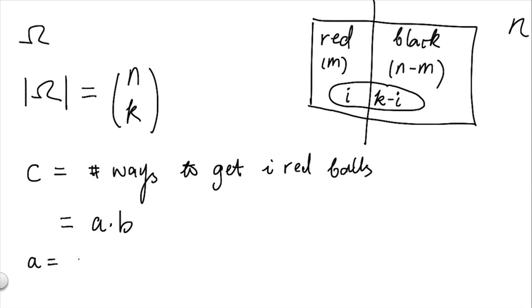Where a is the total number of ways to select i red balls out of m red balls. So, the number of ways to get i out of m red balls. Going back to the picture, this corresponds to the total number of ways to get these balls.